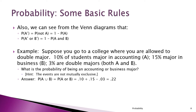Suppose you're at a college that allows double majors. We know 10% of students major in accounting (A), 15% major in business (B), and 3% are double majors (A and B). What's the probability of being an accounting or business major? They're not mutually exclusive because you can double major. So the probability of A or B is 0.10 plus 0.15 minus 0.03, which equals 0.22. We subtract 0.03 to avoid double counting those who appear in both lists.